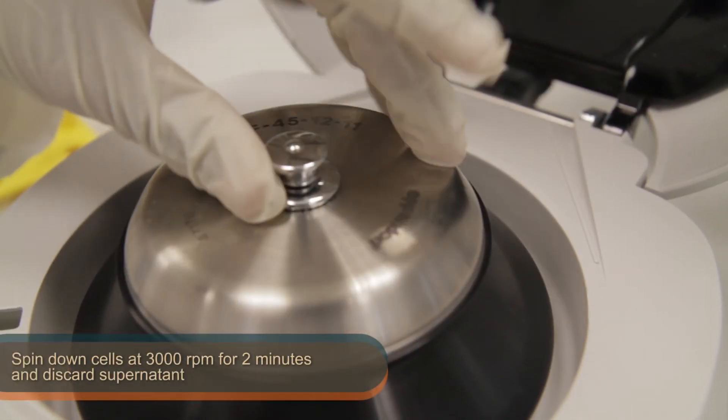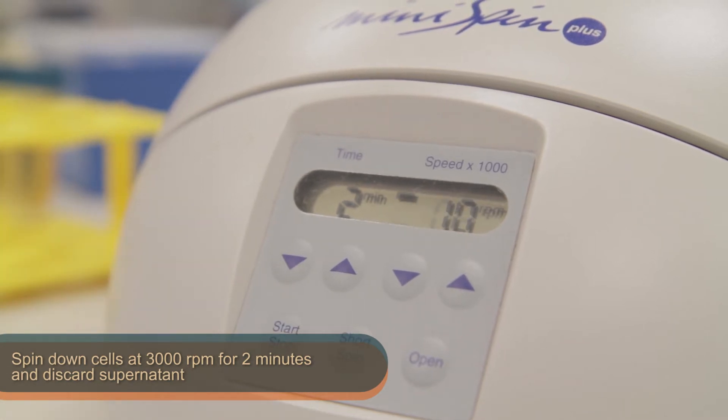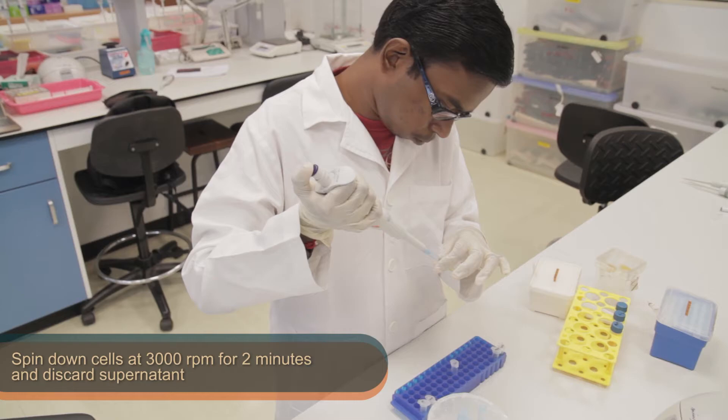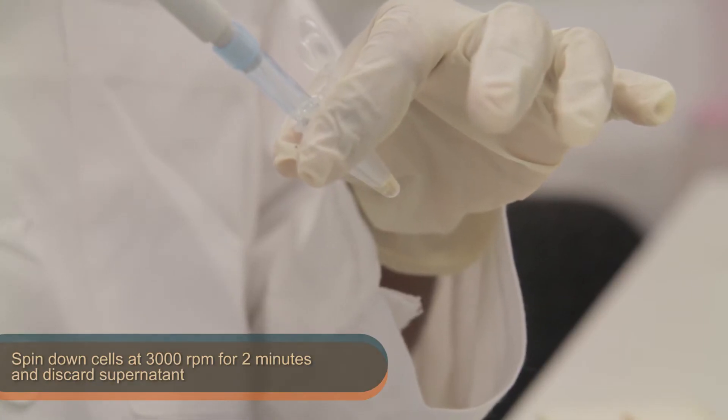Next, spin down the cells at 3000 rpm for 2 minutes and discard the supernatant. Make sure the centrifuge is balanced and be careful to leave the cell pellet intact.